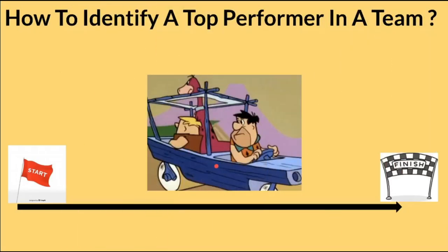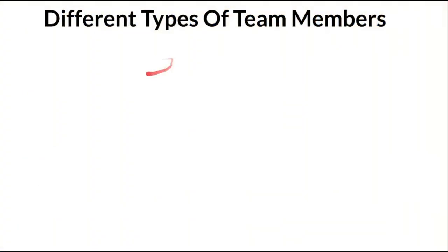For example, this is the Flintstone car. In this car there is no engine — the team members are the engine. The team members have to move this car from the start to the finish, and this car is the goal for the team. They have to achieve this goal.